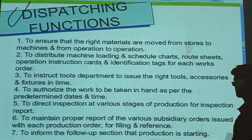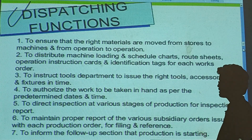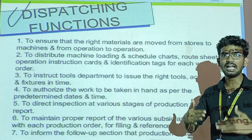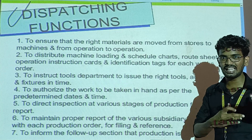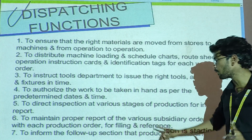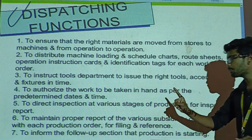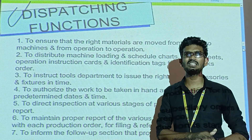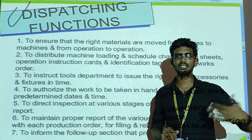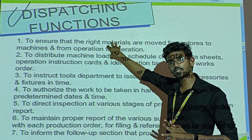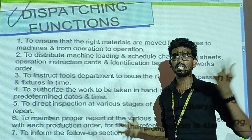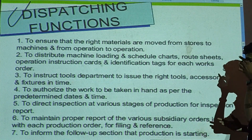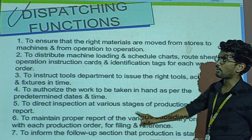The sixth function is to maintain the proper record of the various subsidiary orders issued with each production order for filing and reference. If you want to make a proper record of all subsidiary orders, that is the responsibility of the dispatching department.